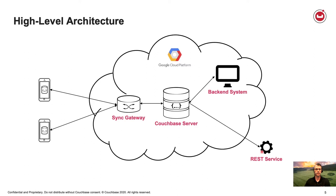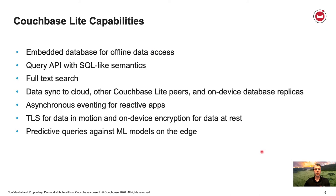When we talk about Couchbase Lite, what are some of the capabilities? The first and primary is it's an embedded database for offline data access. It is a lightweight NoSQL document database. It is embedded, so if you're familiar with our server product — a distributed database that runs across multiple nodes — Couchbase Lite is not the same architecture. It's not a distributed database; it's embedded typically in an application on a device. There are query capabilities with SQL-like semantics and full-text search capabilities.